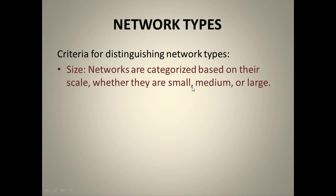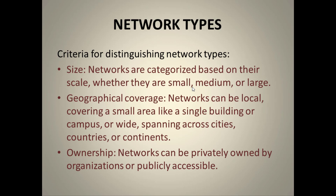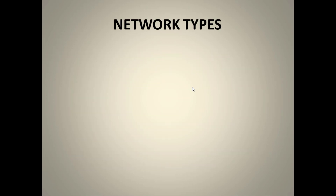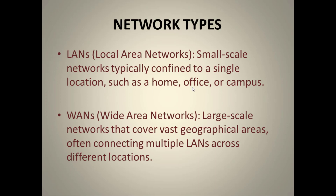Network types can be distinguished by size, geographical coverage, and ownership. Networks range from small to large and can span a single room, building, campus, city, or continent. Based on these criteria, LANs (Local Area Networks) are small-scale networks confined to locations such as a home, office, or campus. WANs (Wide Area Networks) cover vast geographical areas. Networks may also be privately owned or publicly accessible.